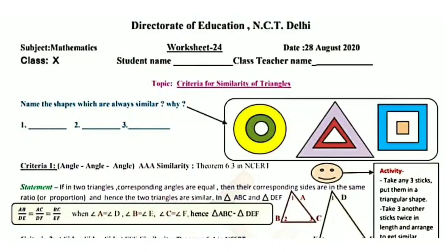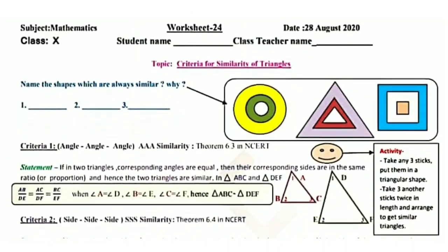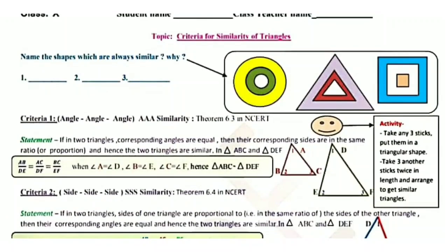Now criteria one for similarity of triangles: the first criteria is Angle-Angle-Angle, called AAA similarity criteria, which is Theorem 6.3 in NCRT. If in two triangles the three corresponding angles are equal, then the two triangles are similar, meaning their corresponding sides are in the same ratio.